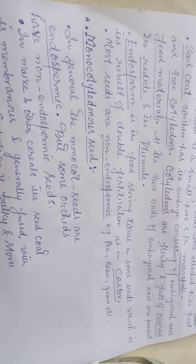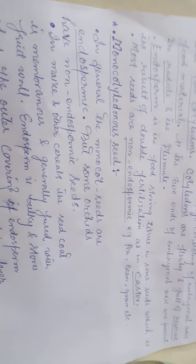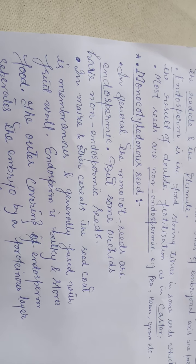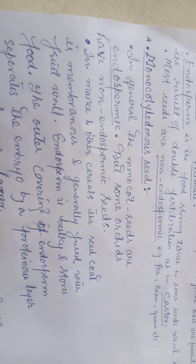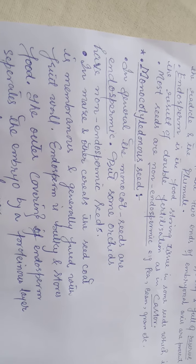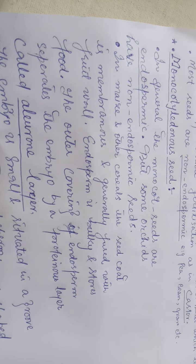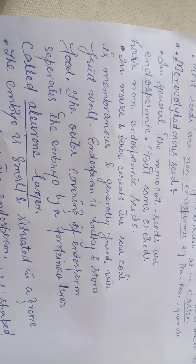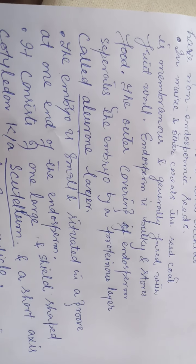In monocotyledonous seeds, in general the monocotyledons are endospermic, but some orchids have non-endospermic seeds. In maize and other cereals, the seed coat is membranous and generally fused with the fruit wall. The endosperm is bulky and stores food. The outer covering of the endosperm separates the embryo by a proteinaceous layer called the aleurone layer.